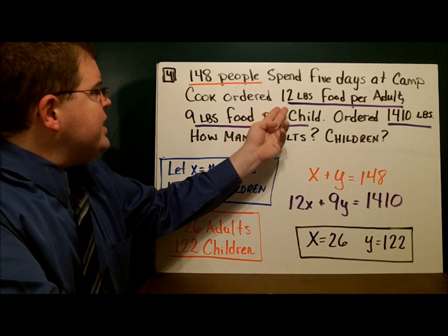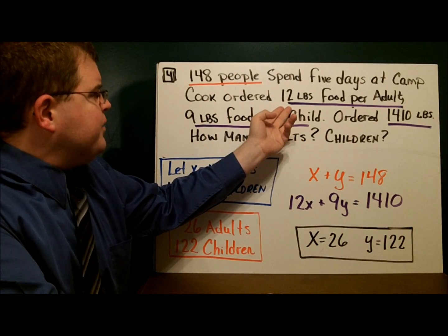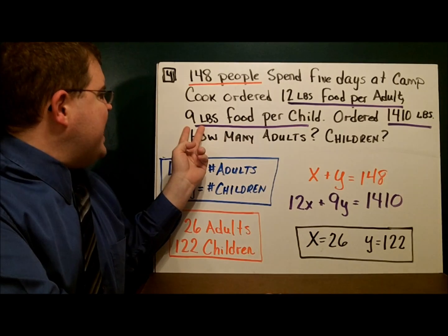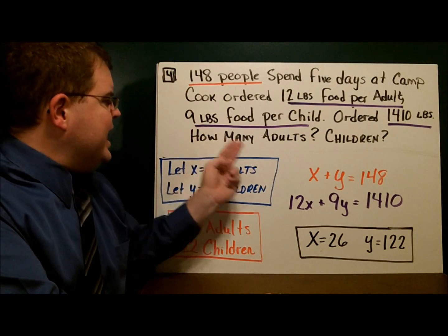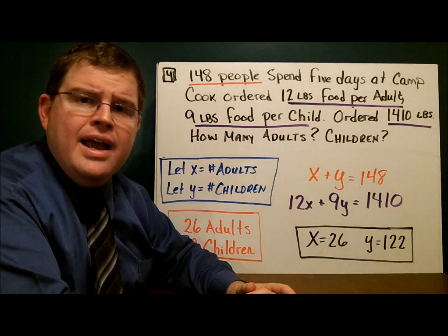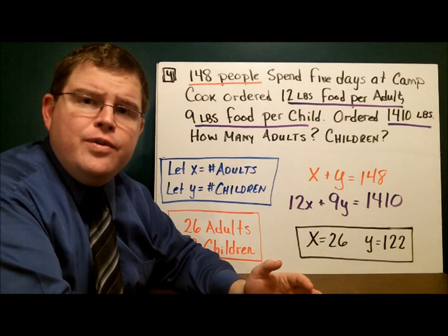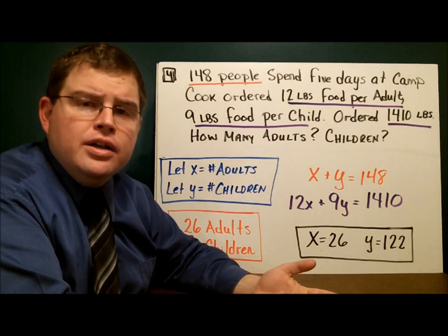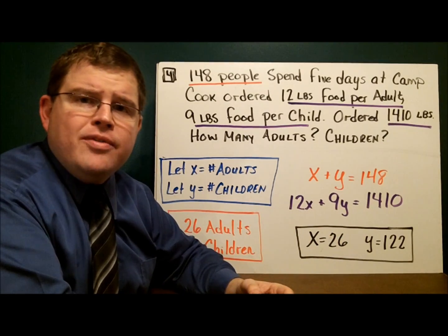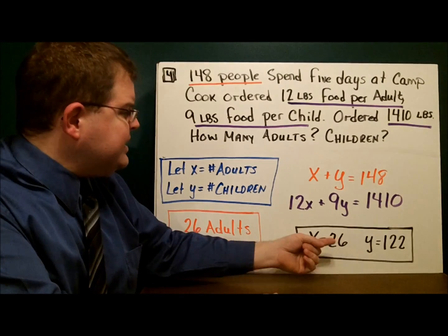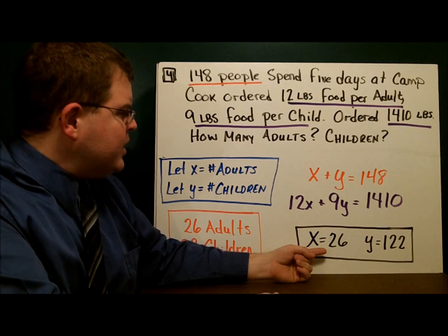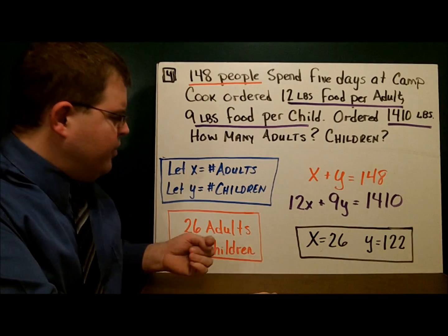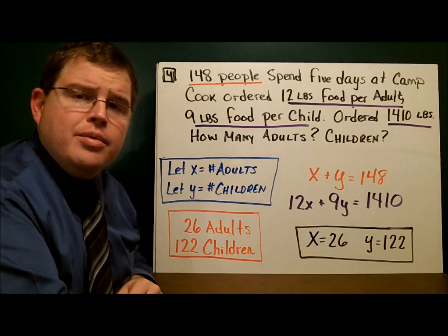Every adult will eat 12 pounds of food — 12x — and every child will eat 9 pounds — 9y. The food total adds up to 1,410, so 12x plus 9y equals 1,410. Solving the system: x equals 26, which is the number of adults, and y equals 122, which is the number of children.